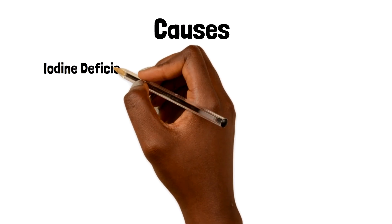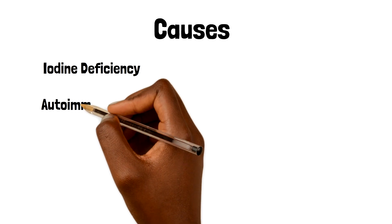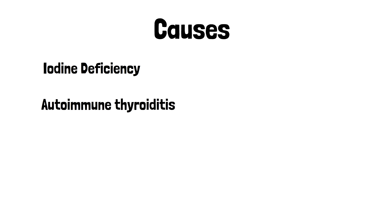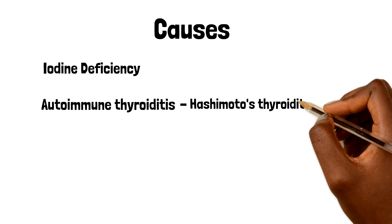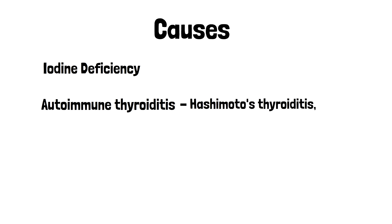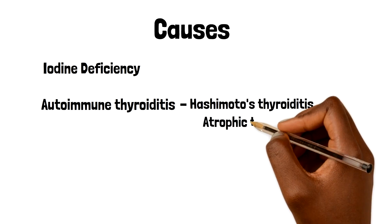Common causes of hypothyroidism include iodine deficiency, which is the most common cause worldwide due to dietary deficiency. We also have autoimmune thyroiditis, which is either associated with a goiter — known as Hashimoto's thyroiditis — or without a goiter, known as atrophic thyroiditis.